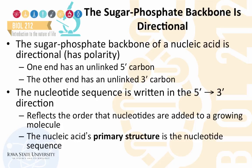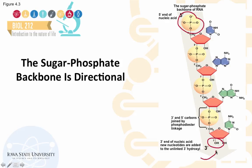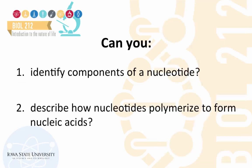The nucleic acid's primary structure is the sequence of these nucleotides. If you look at an image of one strand of a nucleic acid, you can see that there is a 5' phosphate group that is unattached at one end and a 3' hydroxyl group that is unattached on the other end. During polymerization, new nucleotides are added to this end of the growing polymeric chain.